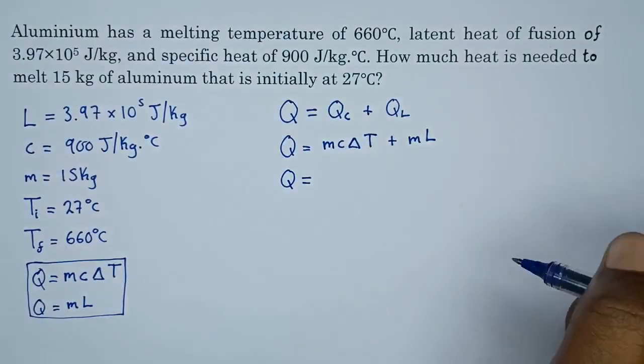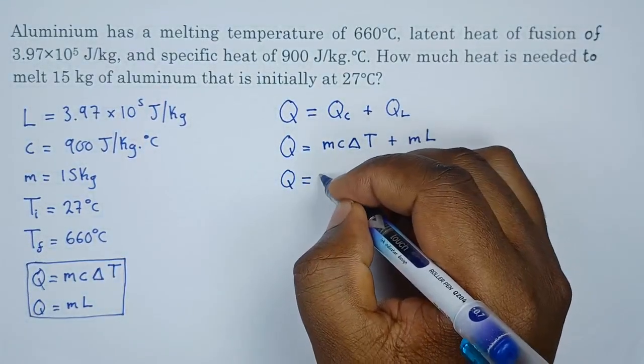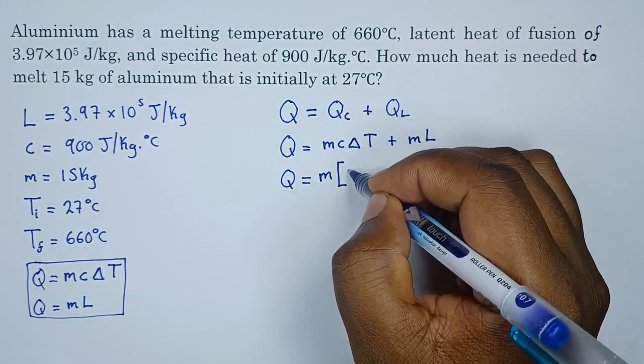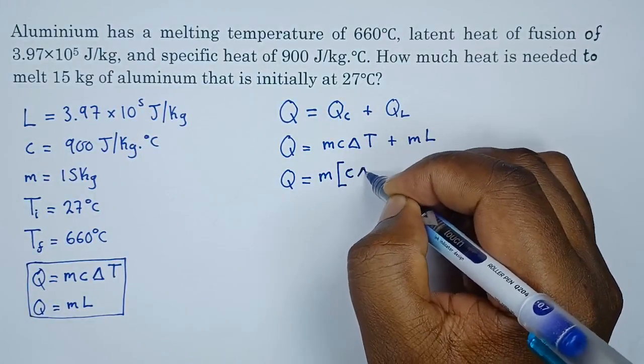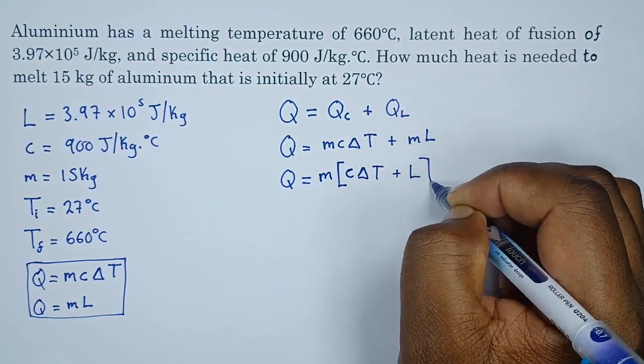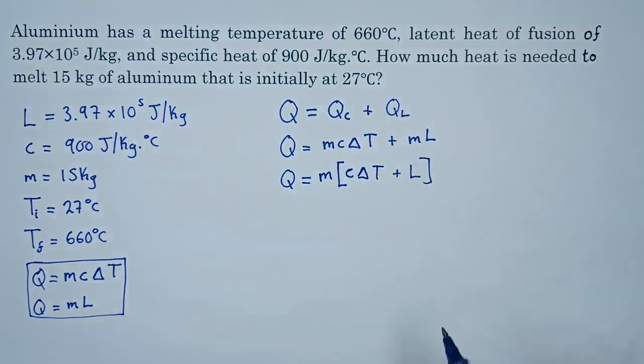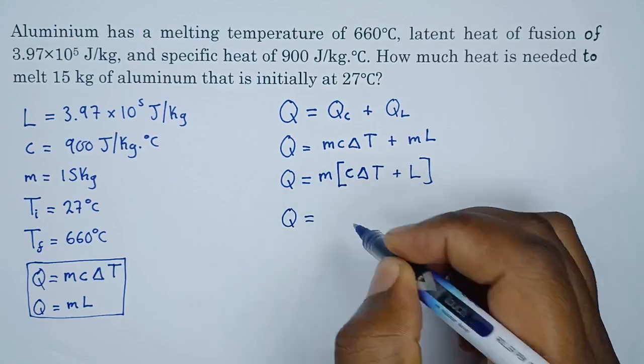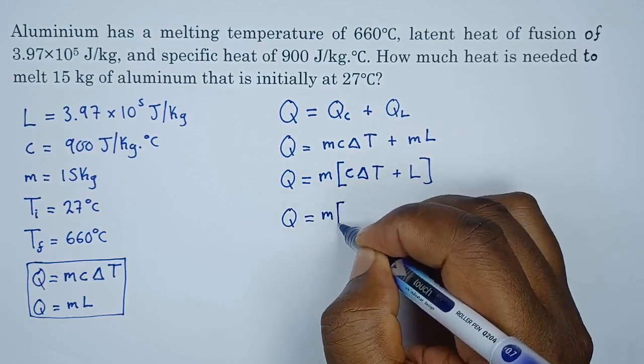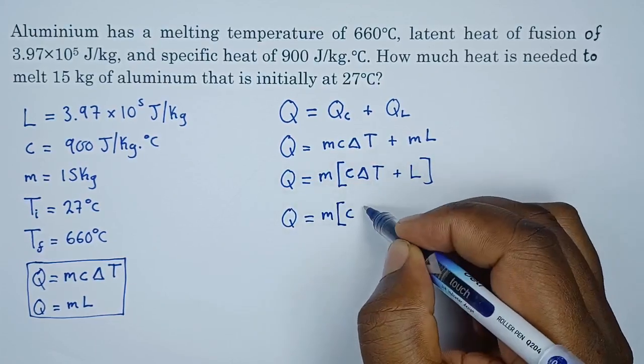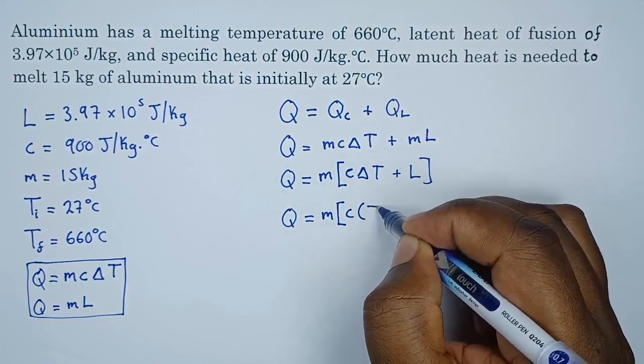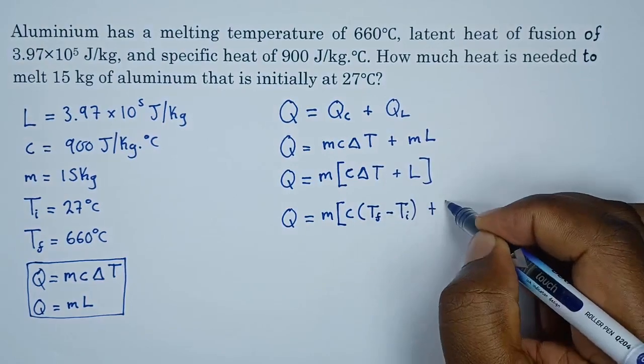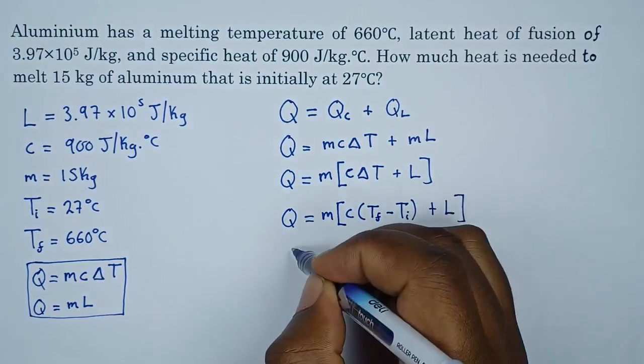So the energy will be equal to, let's factor out mass since mass is common. What do we have here? C times change in temperature plus L. Then from there we can simply say energy is equal to mass times, c remember, change in temperature is the final temperature minus the initial temperature, plus the latent heat.